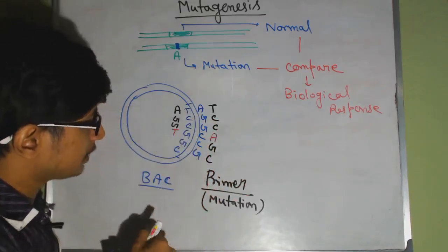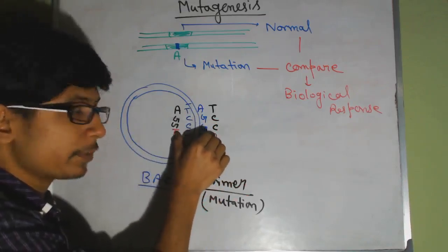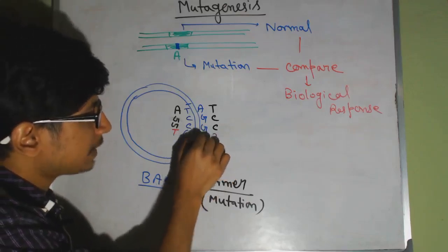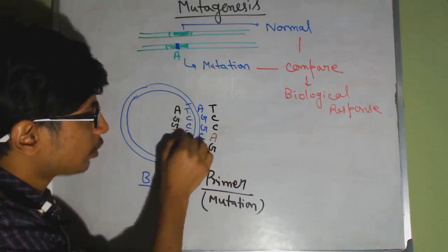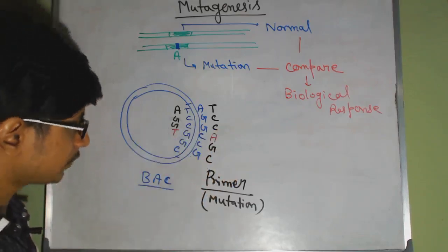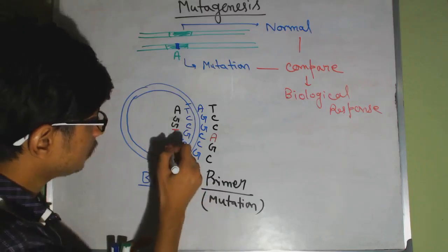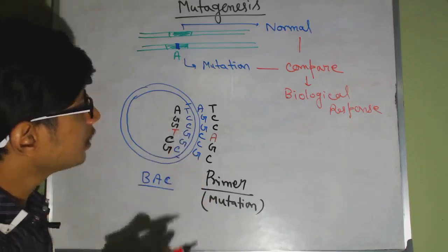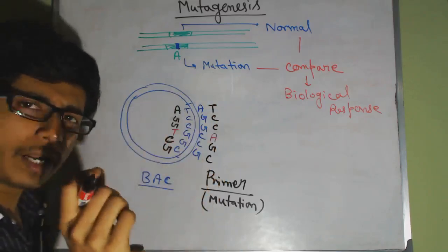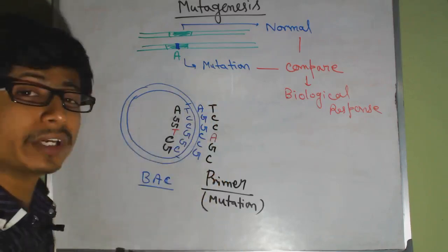This is the dimer, this is the base pair GC where we want to put a mutation. So once we put A instead of C here, so definitely the complementary of it will be T. So we have to put a T here, and then the rest of the things, C and G. So these are the two different primers that we design. They are mutated in one base pair, that is instead of GC, we have a TA.